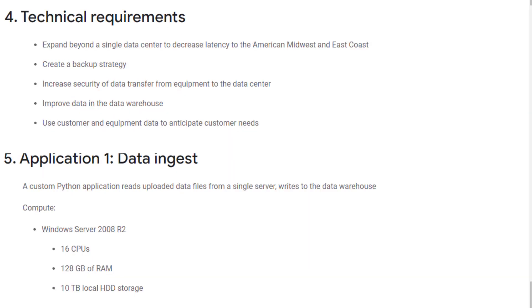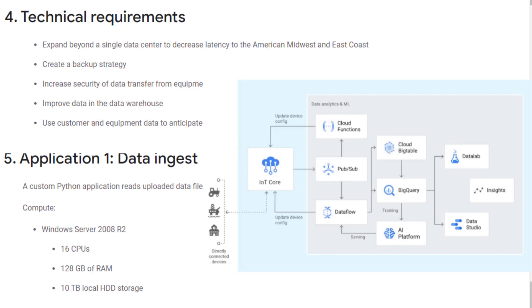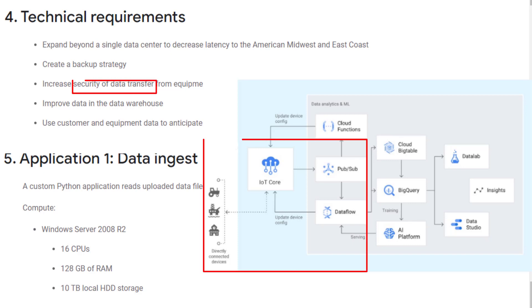First, you need to convert all vehicles to cellular and use Cloud IoT Core to handle the front-end. Cloud IoT Core is a fully managed service to easily and securely collect, manage, and ingest data from globally distributed devices. It establishes two-way communication with your devices, which will decrease the wait time. Then Cloud IoT Core uses Cloud Pub/Sub for real-time messaging to ingest data into Cloud Dataflow for real-time data processing.